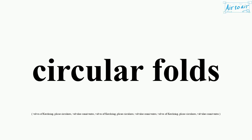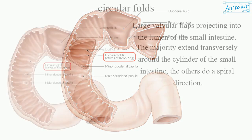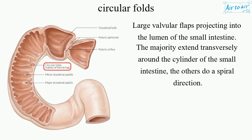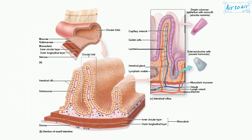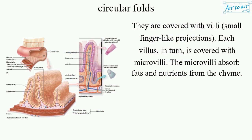Circular Folds are large valvular flaps projecting into the lumen of the small intestine. The majority extend transversely around the cylinder of the small intestine, while others take a spiral direction. They are covered with villi.